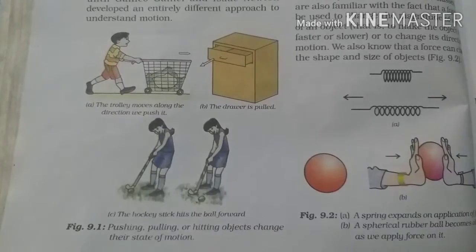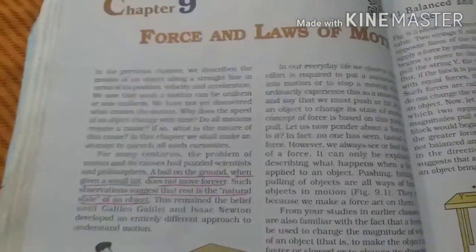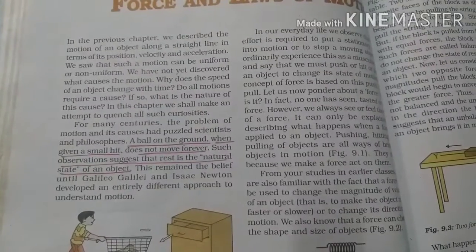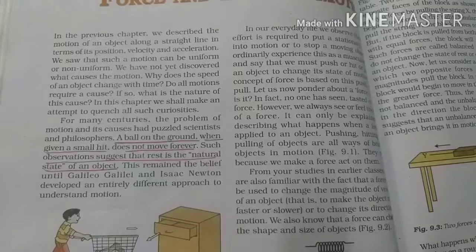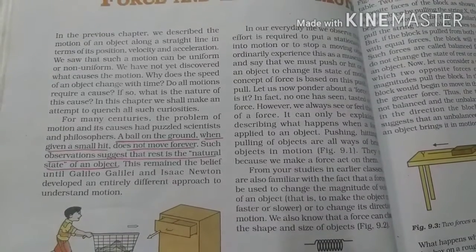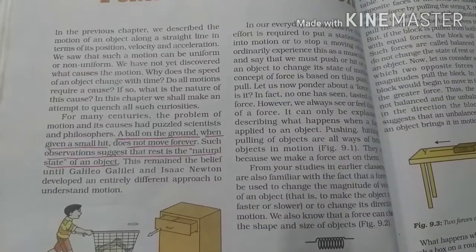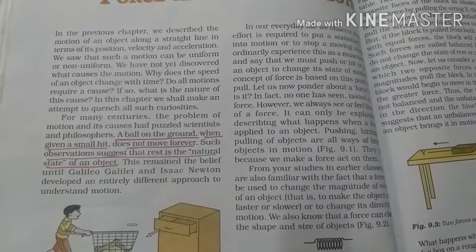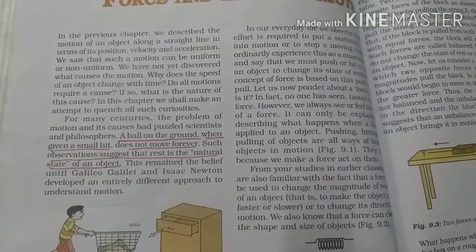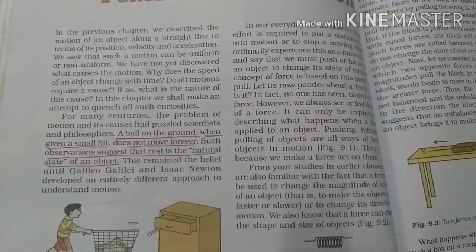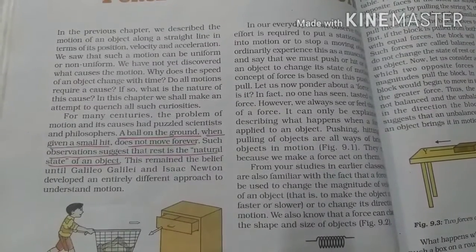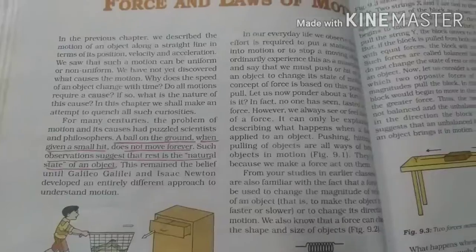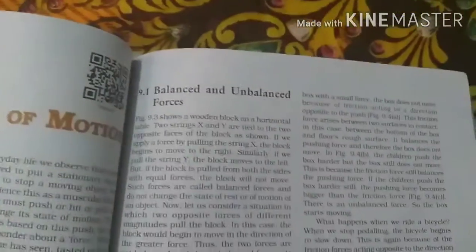Pushing, pulling, or hitting objects changes their state of motion. If we are pushing or pulling any object, it can change the direction of that object. Force can also change the magnitude - we can make an object slower or faster by applying force. We also know that a force can change the shape, size, and direction of any object.